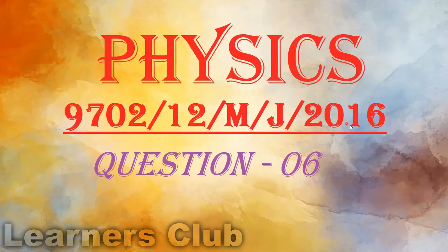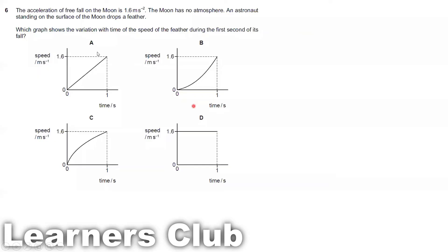Physics major in 2016 question 6. The acceleration of free fall on the moon is 1.6 meter per second square. The moon has no atmosphere and an astronaut standing on the surface of the moon drops a feather. Which graph shows the variation with time of the speed of the feather during the first second of its fall?